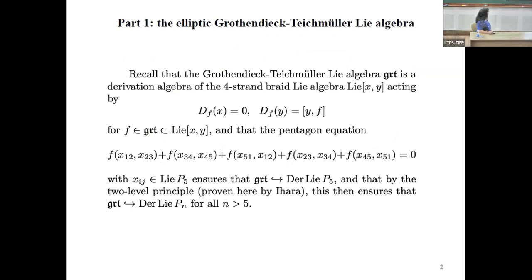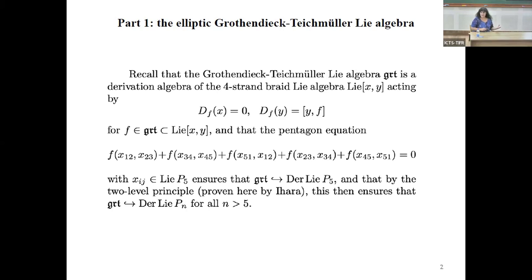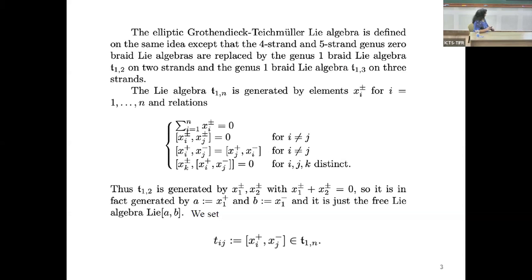I'm going to start with a very quick reminder about the usual setup. In my approach, everything elliptic is going to be related to genus zero. I'm always going to construct the elliptic things from the genus zero things with an extra ingredient, which is not the way Benjamin does it. His way is more geometric and really starts directly from the elliptic situation. But what interests me is the connection between the two, because it gives very explicit ways of constructing both the Lie algebra and the associator.